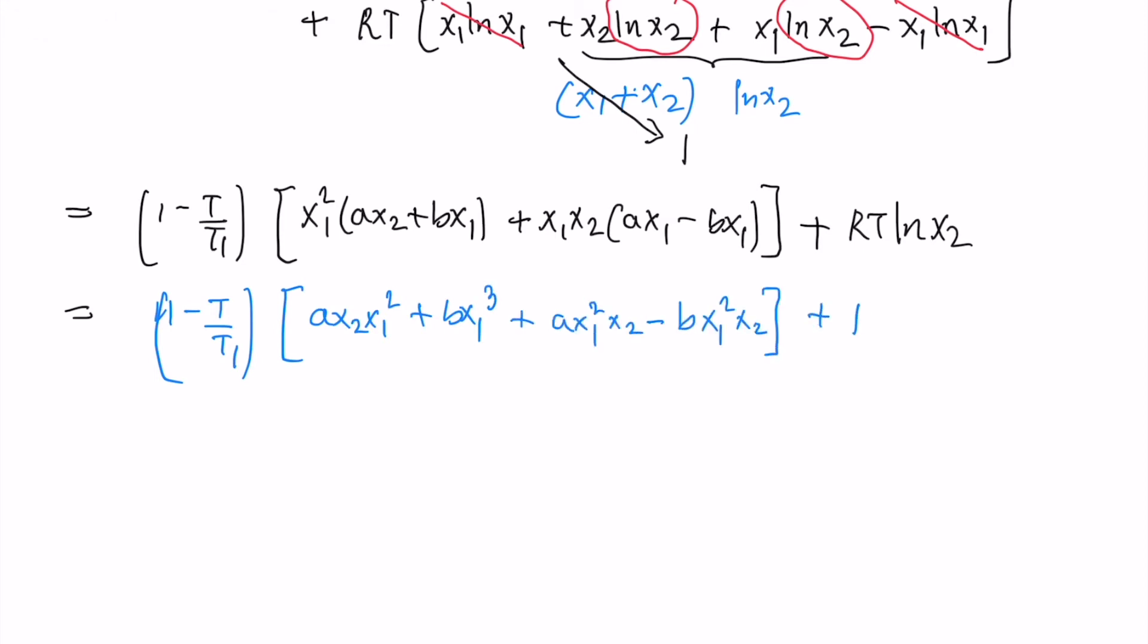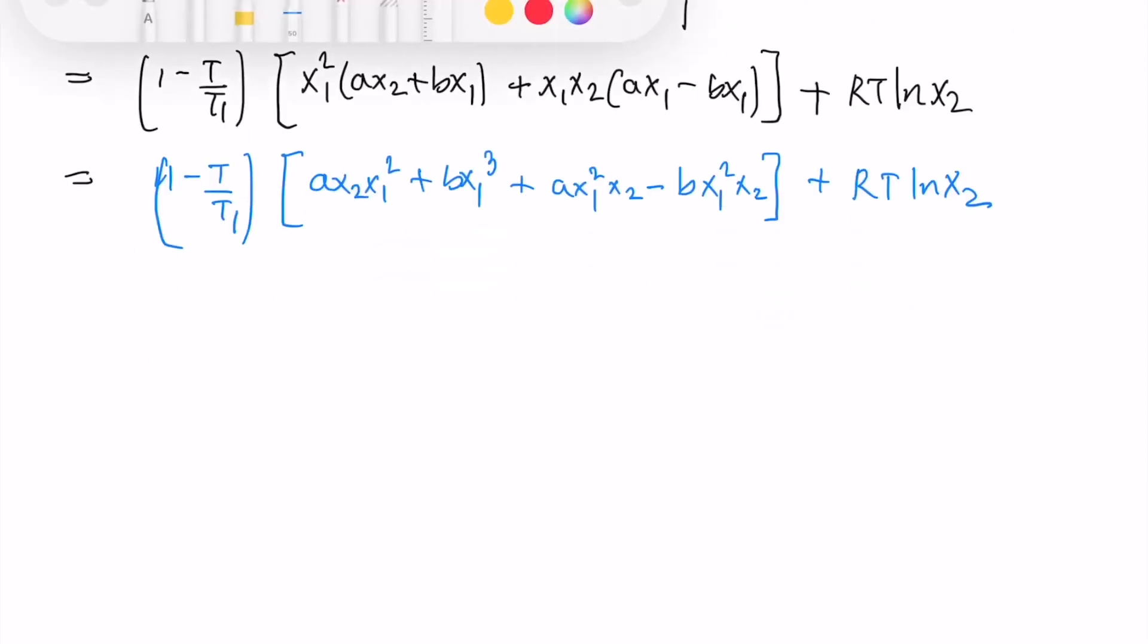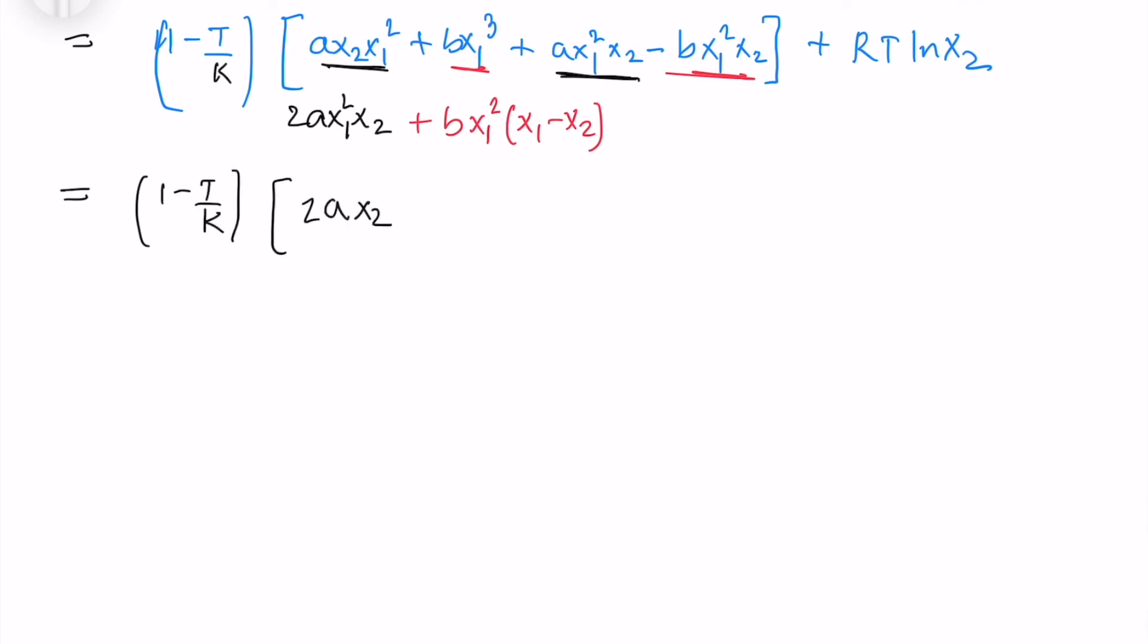So this is how the equation would look like. And I will take some constants outside so that I can simplify much further. I will take x1 square, A x1 square x2, I will add them. And then B x1 square x1 minus x2. So now I can take x1 square constant out and write down the equation.